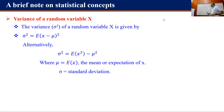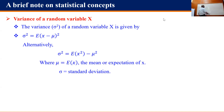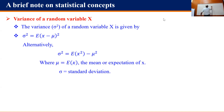Let us prove this. Variance σ² is denoted by the Greek letter sigma squared. σ² = integral from -∞ to +∞ of (x - μ)² · f(x) dx. Expanding: σ² equals the integral of x²·f(x) dx minus 2μ times integral of x·f(x) dx plus μ² times integral of f(x) dx.